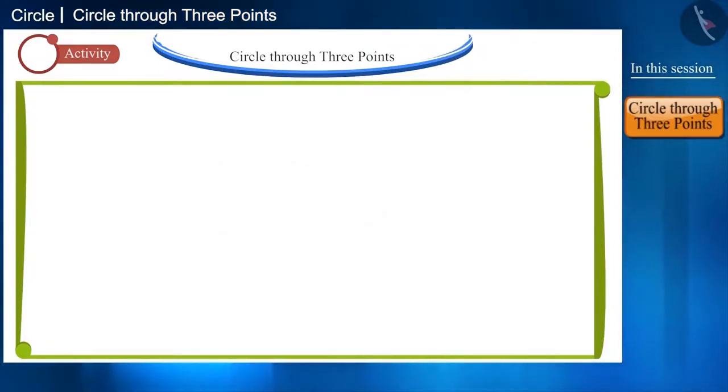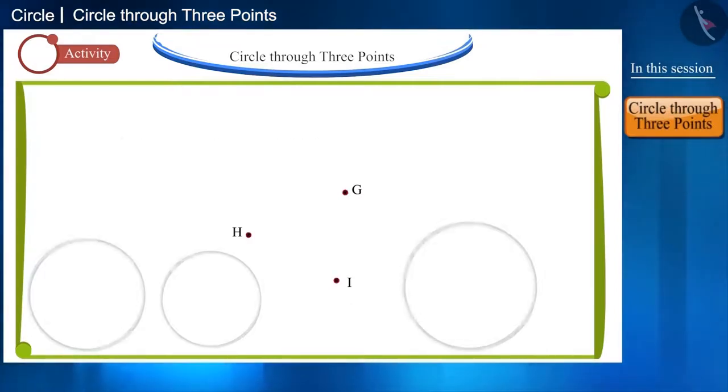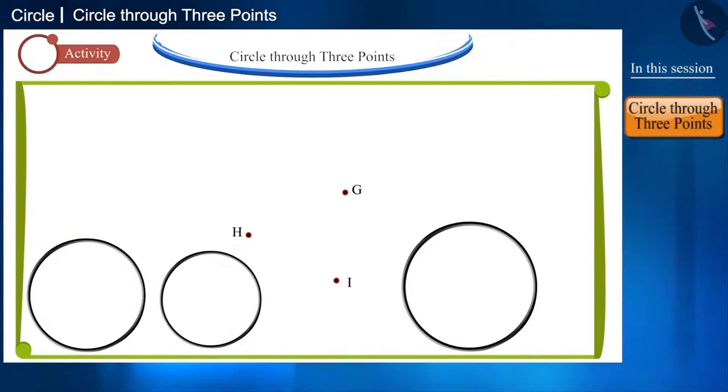Now, if we take the three points G, H and I in such a way that they are not in the same line, then we call these points as non-collinear points. Now, we will try to place the rings on G, H and I. Is there a ring that will pass through all these three points? Let's see.